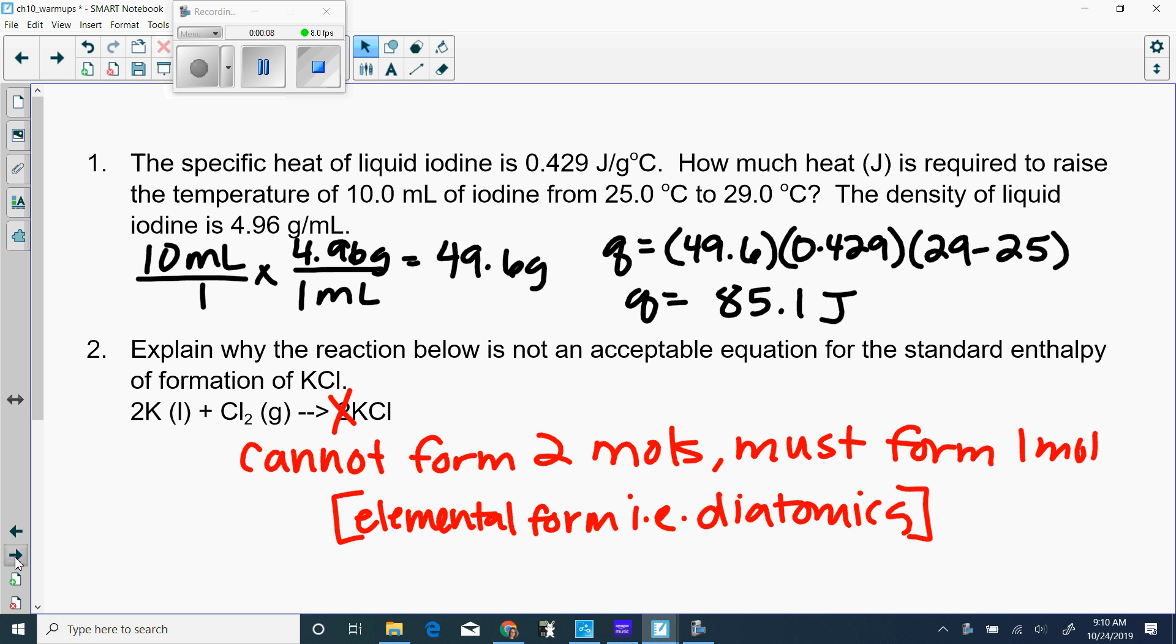Number one is just to remind you that not everything is one gram per milliliter. Iodine has a density of 4.96, so before you plug it into the mass part you need to convert it.